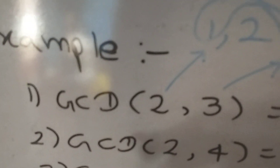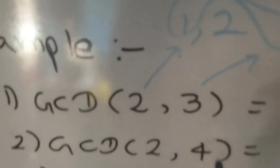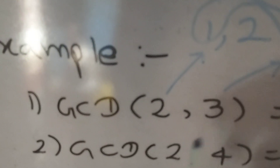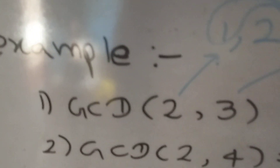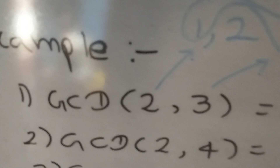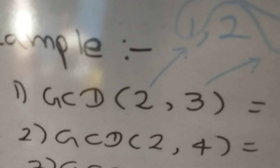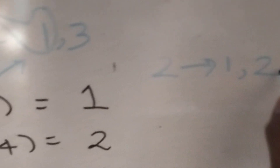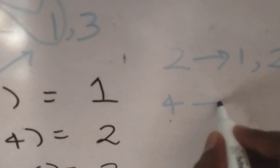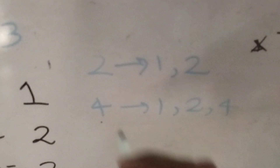The second example is GCD(2, 4). We need to find the maximum number which can divide both 2 and 4. We write all integers that can divide x and all integers that can divide y, then find the maximum common one. 2 can be divided by 1 and 2, and 4 can be divided by 1, 2, and 4.